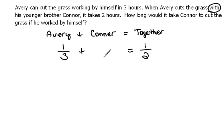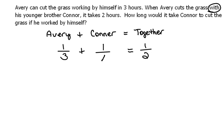It says how long would it take Connor to cut the grass if he worked by himself. We don't know Connor's time — that's what we're trying to find. So Connor can do one job in an unknown amount of time. Here again we have our equation set up and now it's just a matter of working with the rational equation that we know how to do.